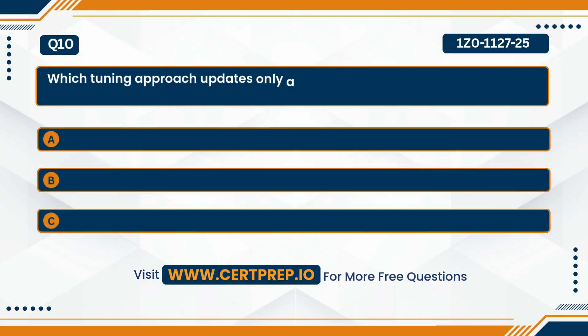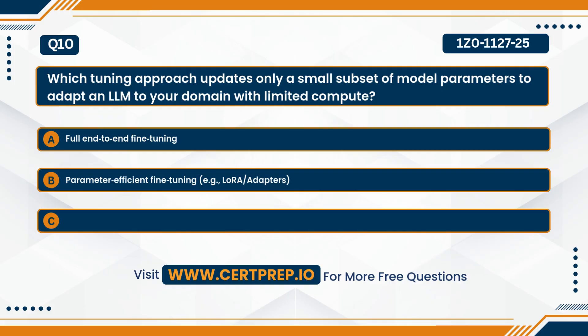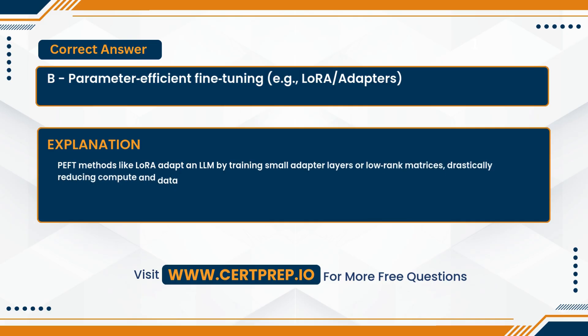Question ten. Which tuning approach updates only a small subset of model parameters to adapt an LLM to your domain with limited compute? A. Full end-to-end fine-tuning. B. Parameter-efficient fine-tuning, e.g. LoRA or adapters. Or C. Prompt-only tuning with higher temperature. The correct answer is B — parameter-efficient fine-tuning, e.g. LoRA or adapters. PEFT methods like LoRA adapt an LLM by training small adapter layers or low-rank matrices, drastically reducing compute and data needs compared to full fine-tuning.